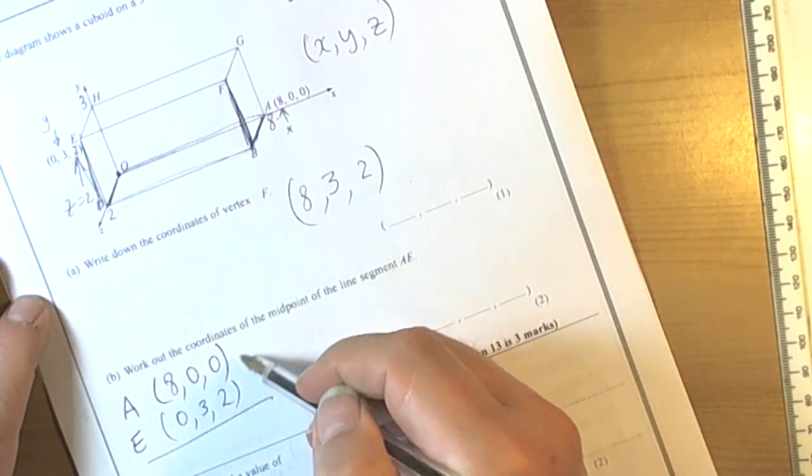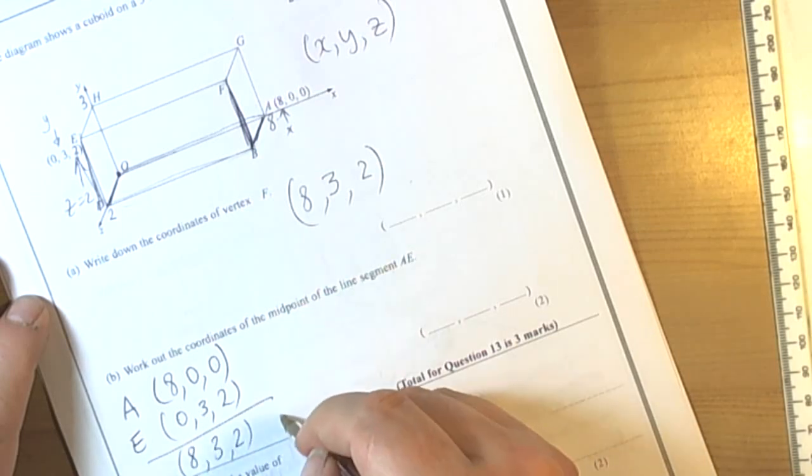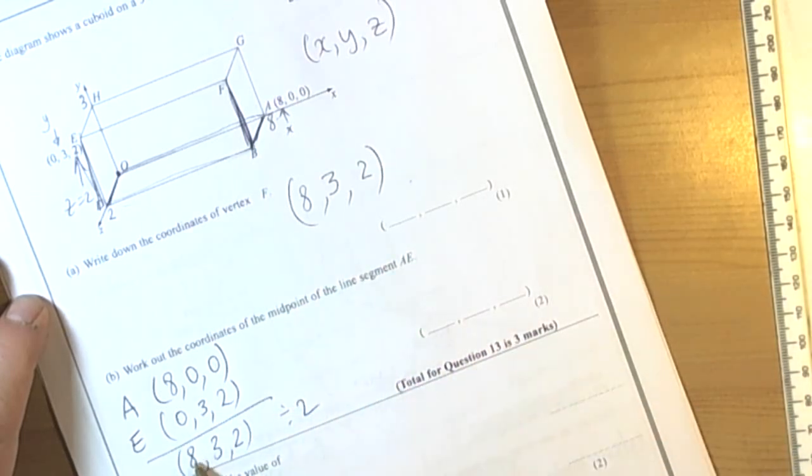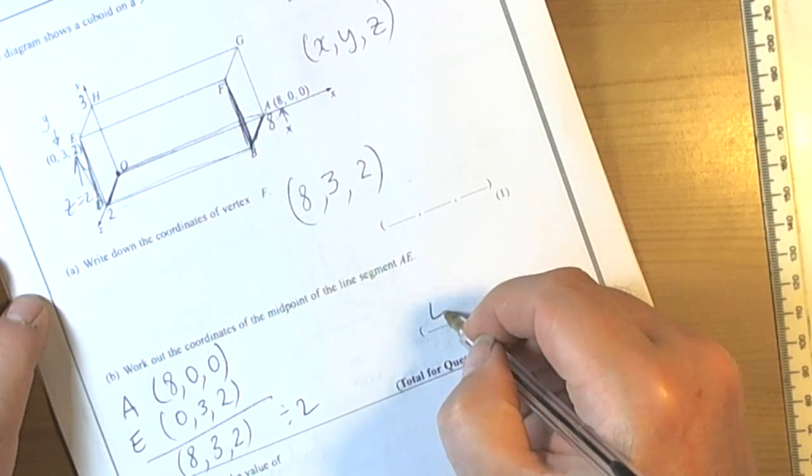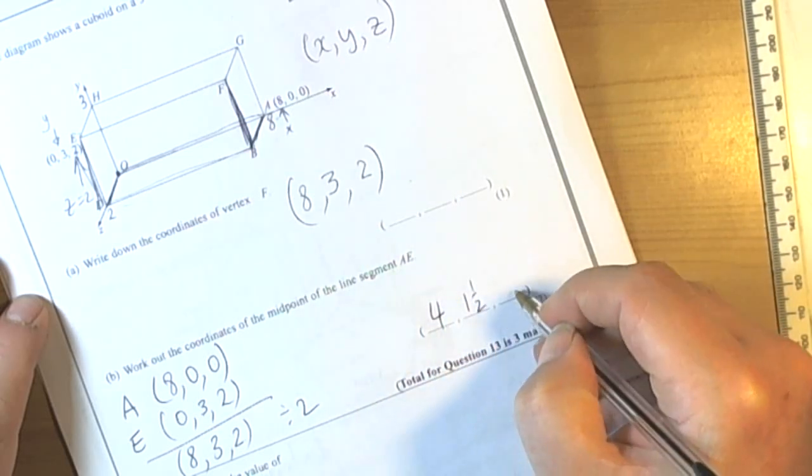To find the midpoint of these 2 coordinates the quickest way is add up the coordinates so 8 and 0 is 8, 0 and 3 is 3, 0 and 2 is 2, and then divide that by 2. So we share each of the coordinates by 2 to end up with 4, 1 and a half, 1.